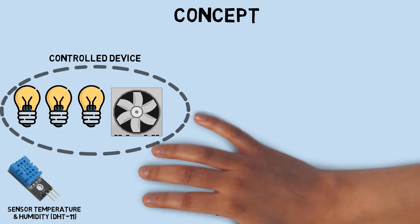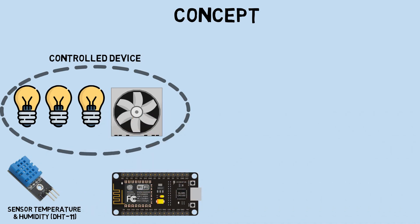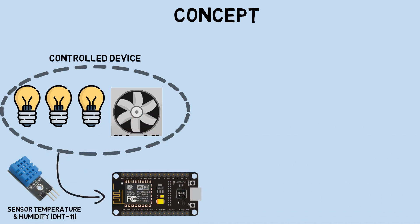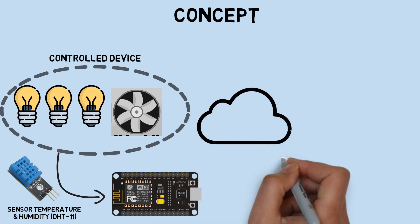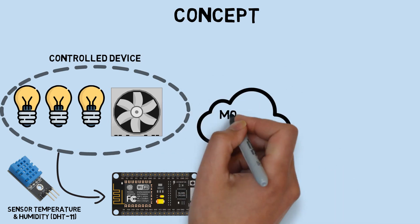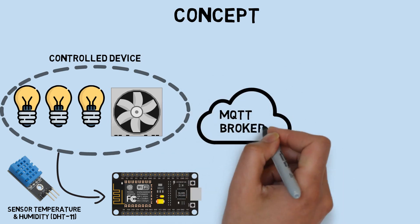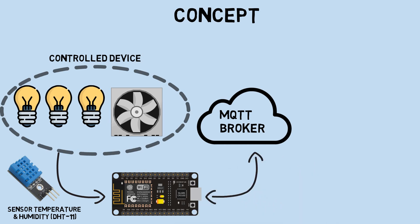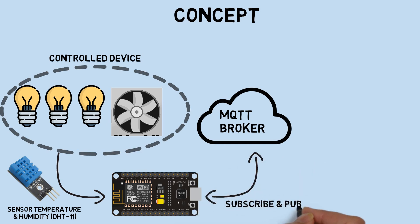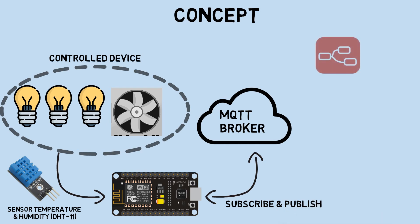We use an ESP8266 as the IoT device; the sensor and all devices connect to the GPIO of the ESP. The ESP device is connected to a MQTT broker — the sensor results will be published to the MQTT broker, and the ESP device will receive commands as a subscriber to control the devices.